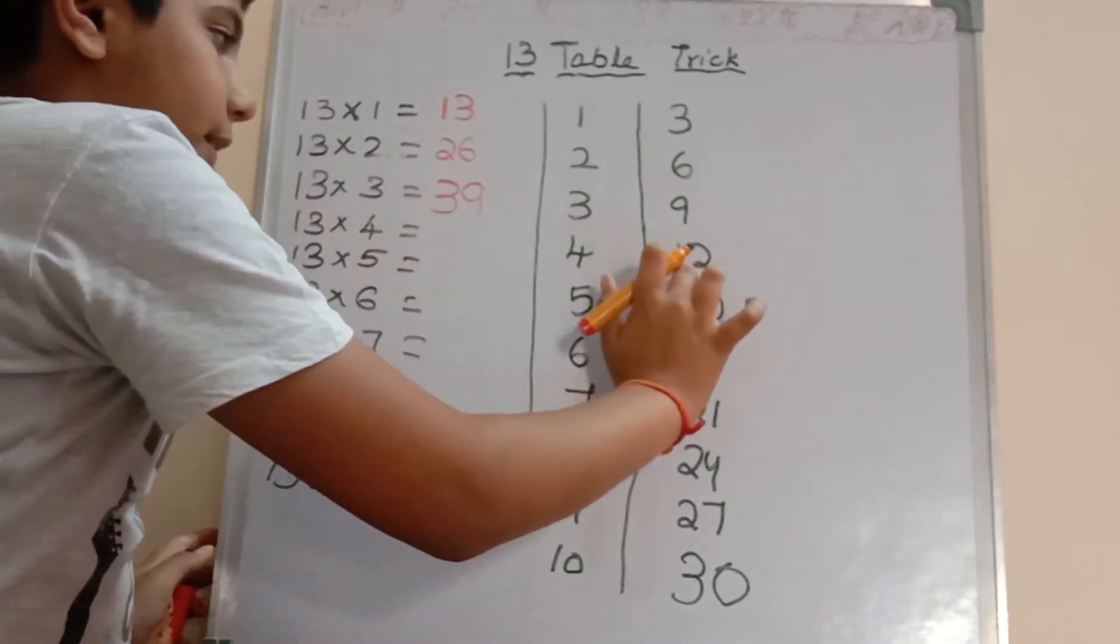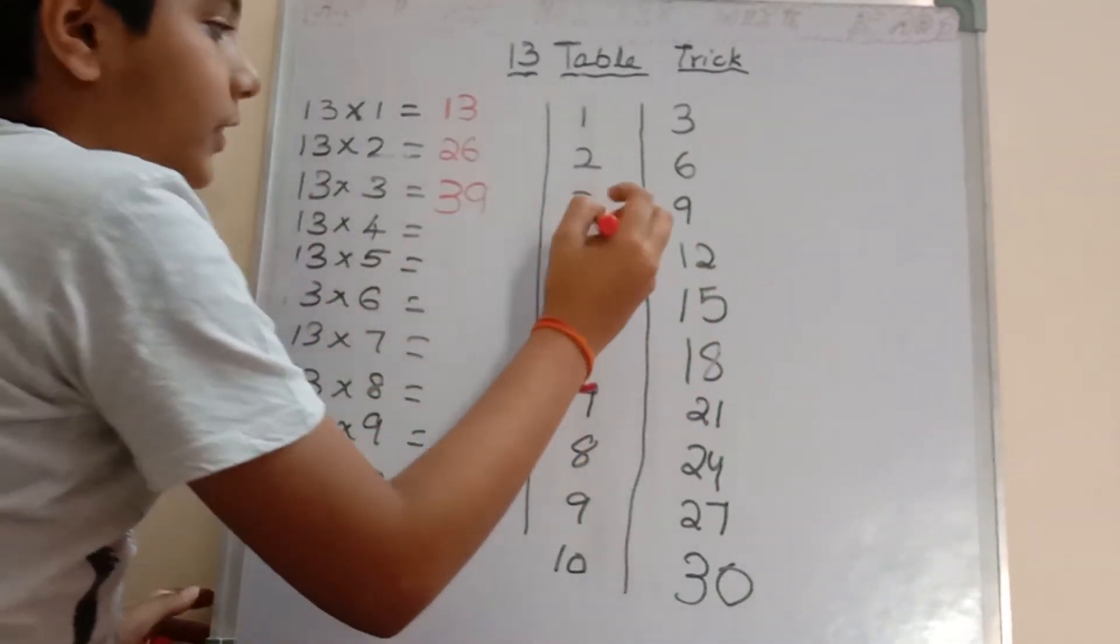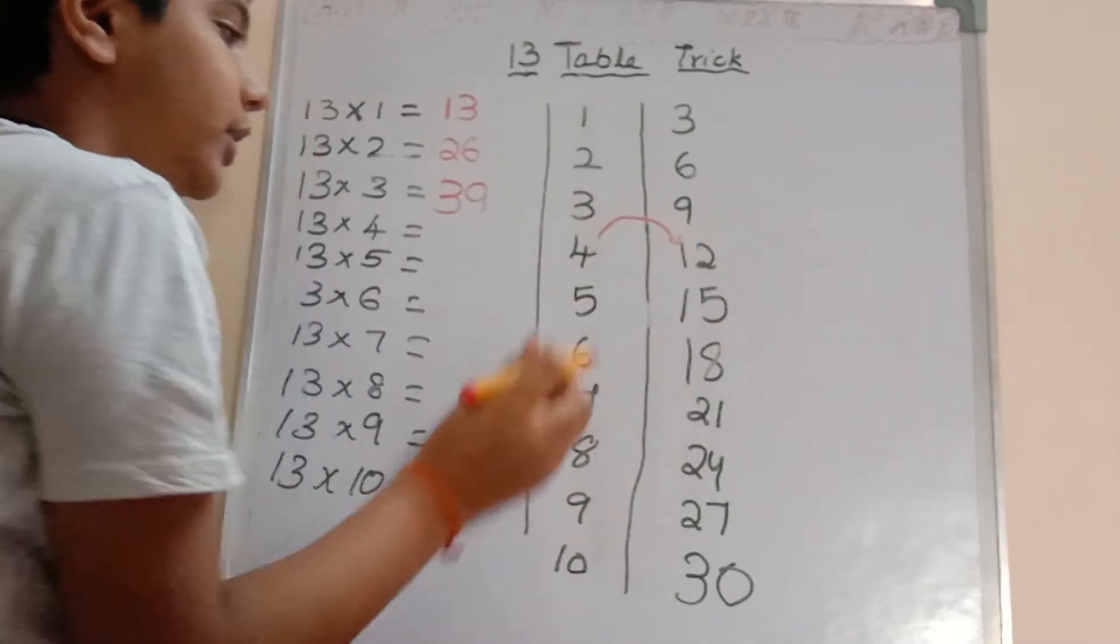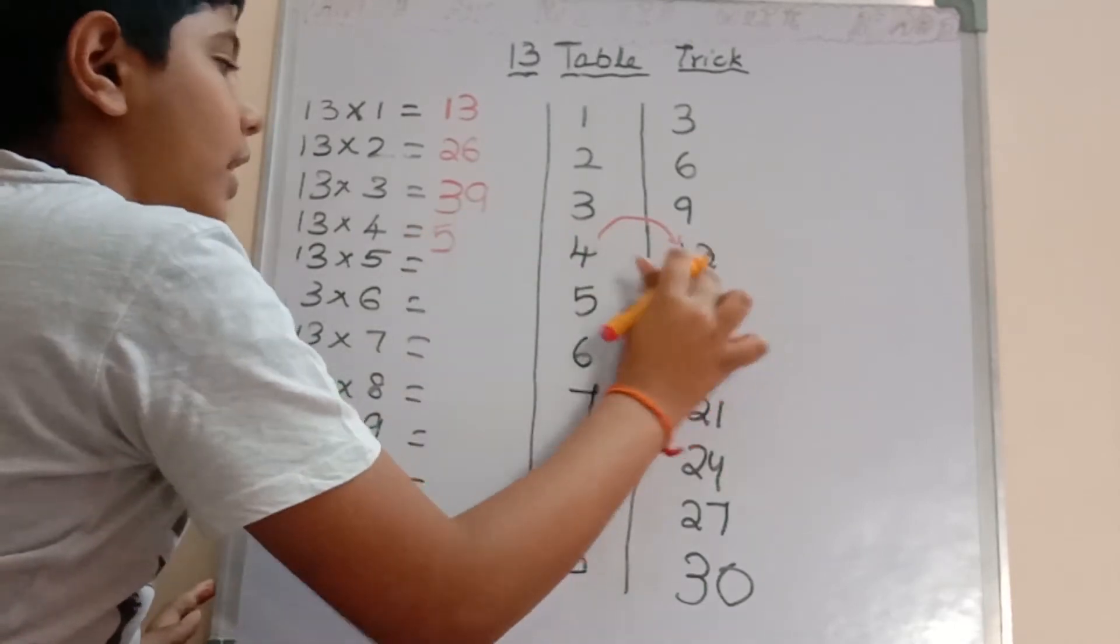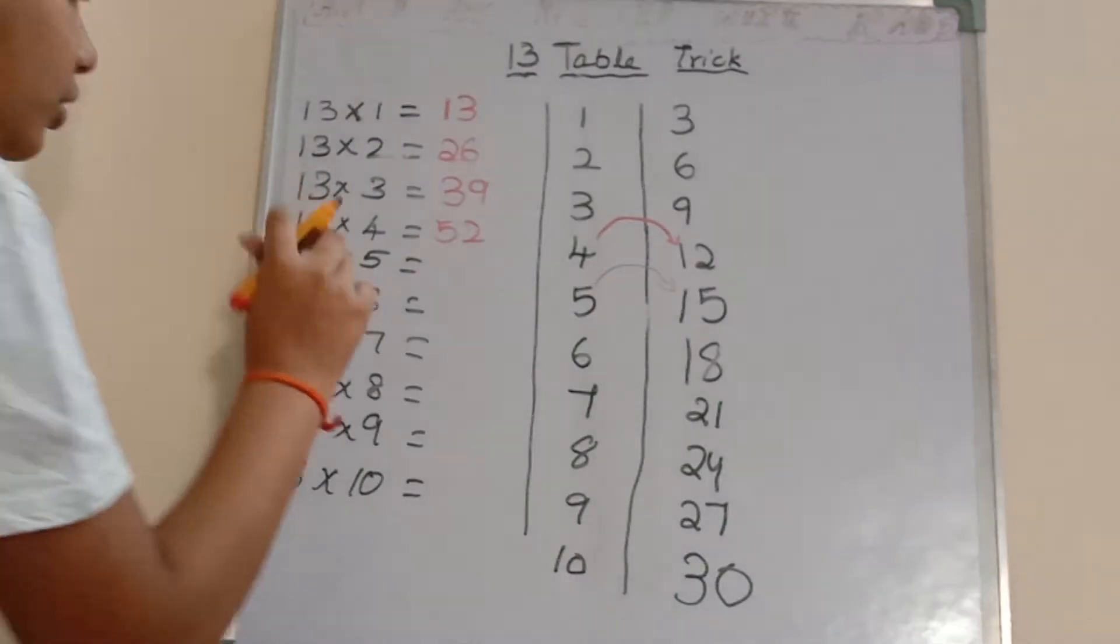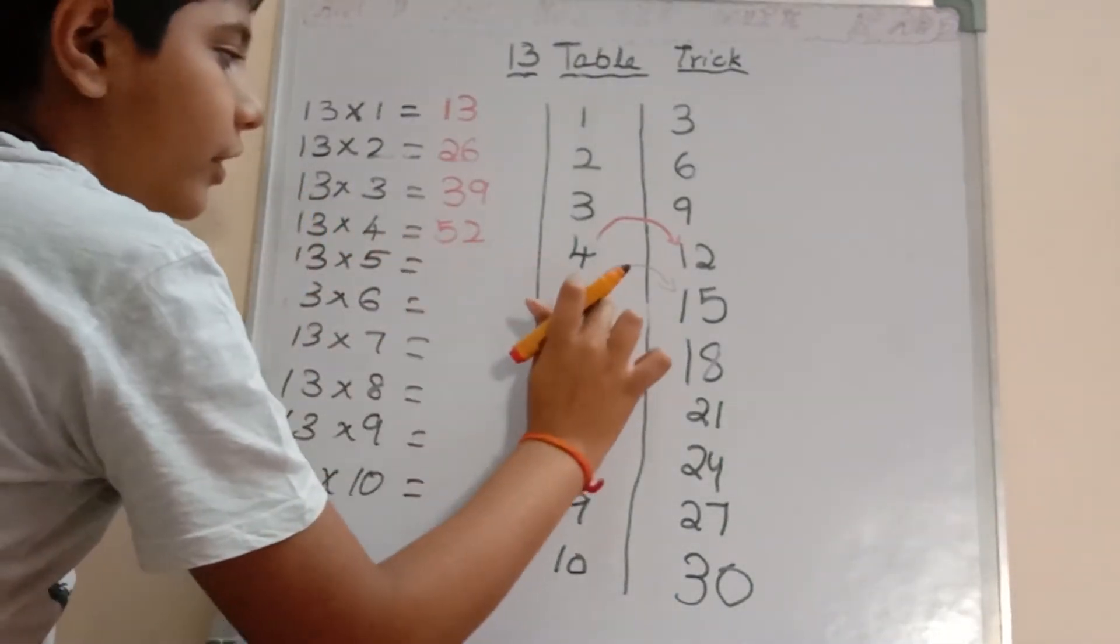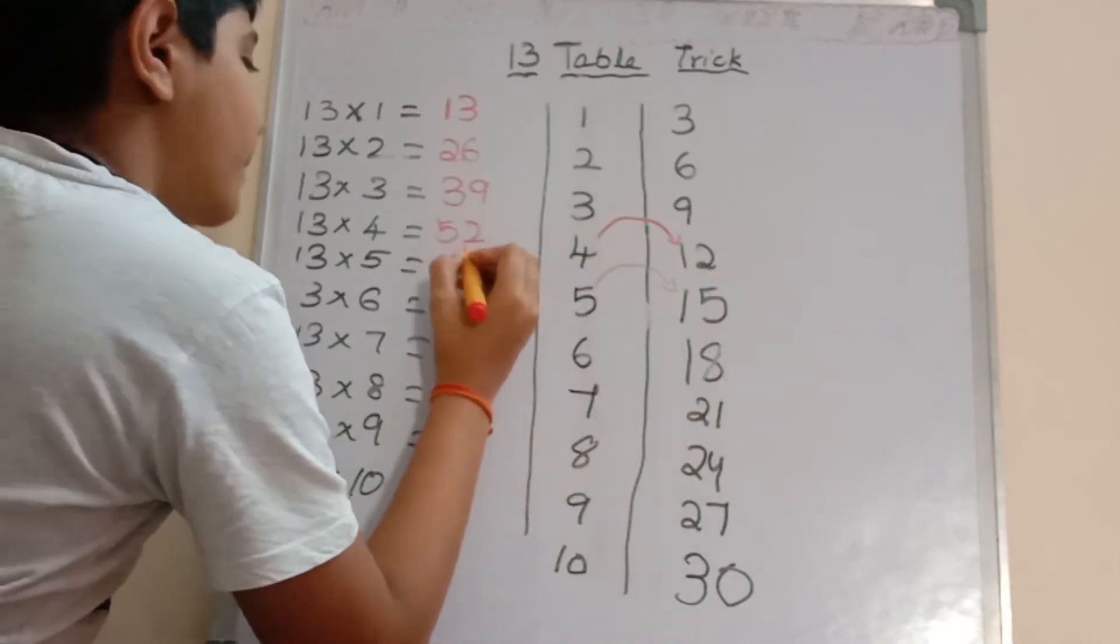Now here there is a two-digit number, so we should add the 4 and the next digit. Now 4 plus 1 is 5, so 13 times 4 is 52. 13 into 5 is 5 plus 1, which is 6, so 65.